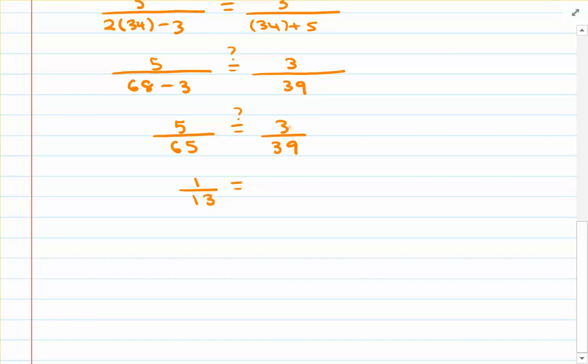Now, the fraction on the right, we have 3 over 39. Now, both these numbers are divisible by 3. When you divide 3 by 3, you get 1, of course. And what do you get when you divide 39 by 3? You get 13.